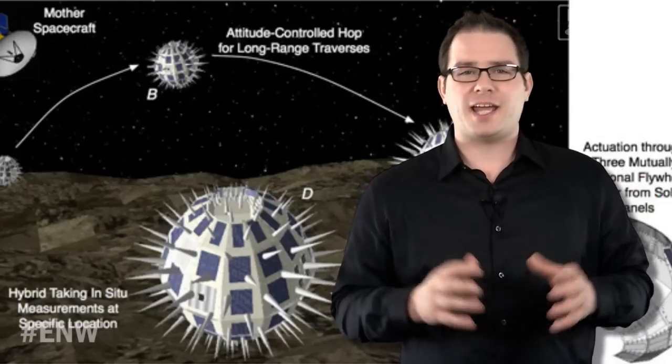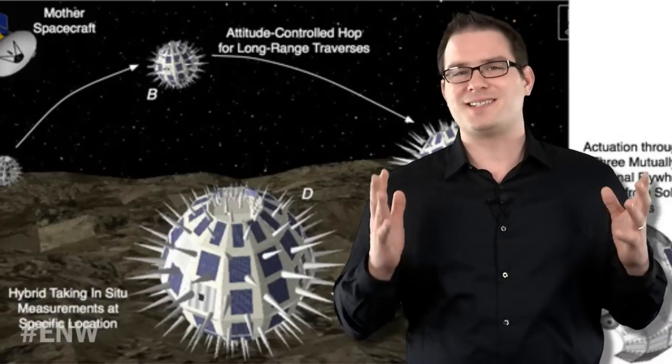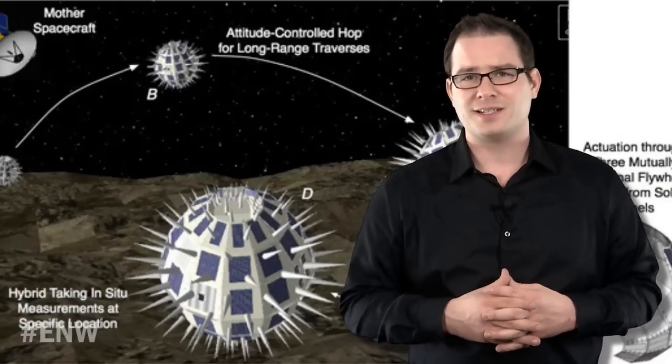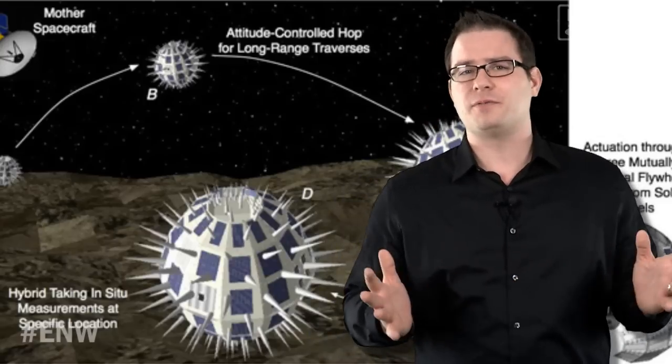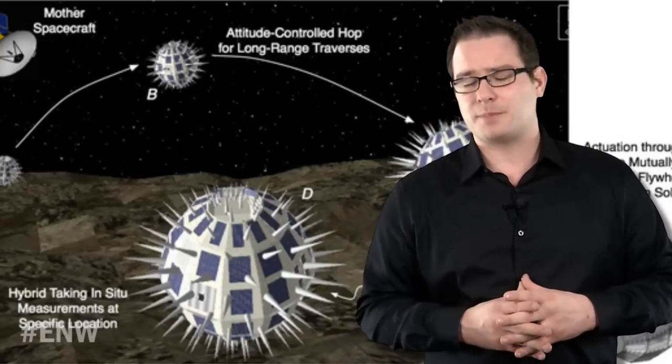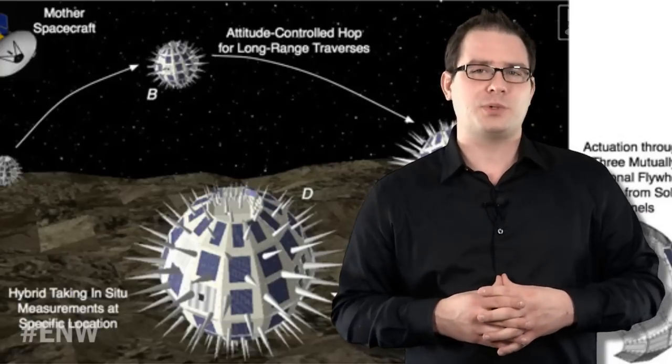As these spin, the spikes dig in and the hedgehog rolls and jumps in up to 10 meter arcs over the moon's surface. Take that, Sonic! The little balls, with an uncanny resemblance to medieval flail weaponry, would relay data back to the mother ship, which would then forward it on to the Earth-based researchers.